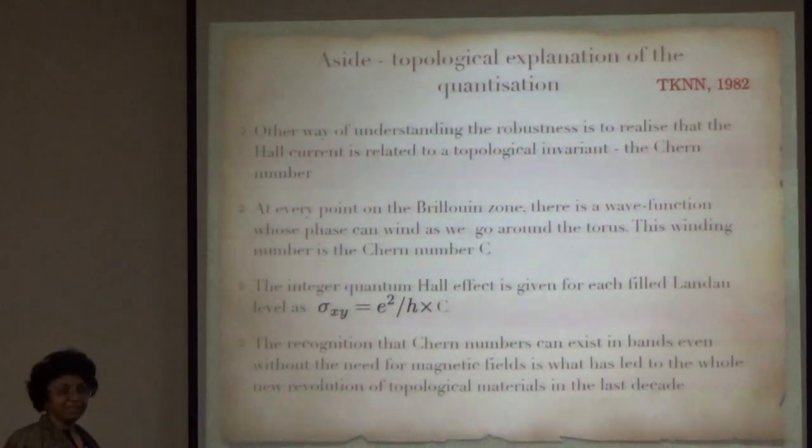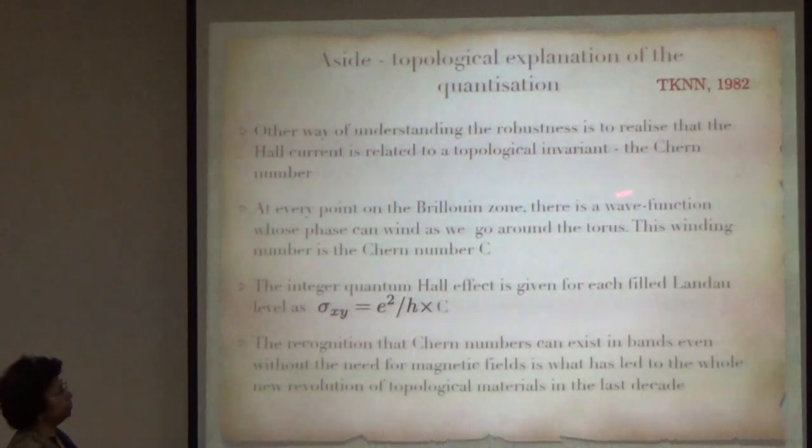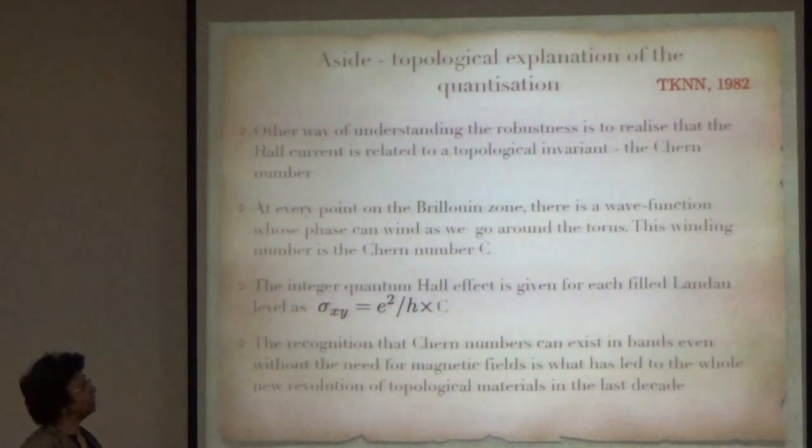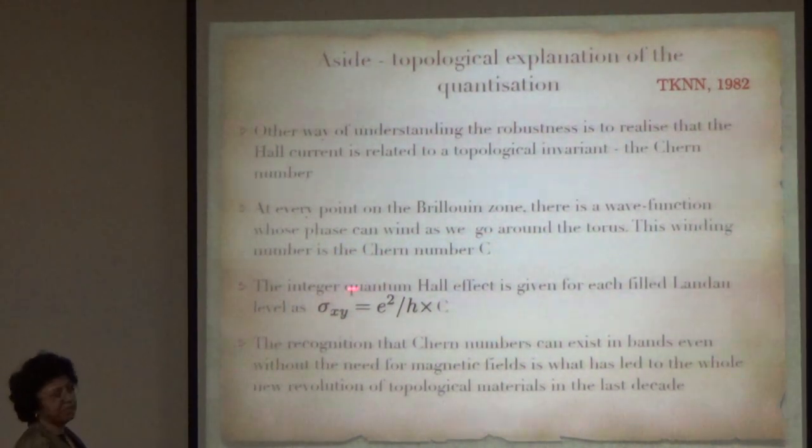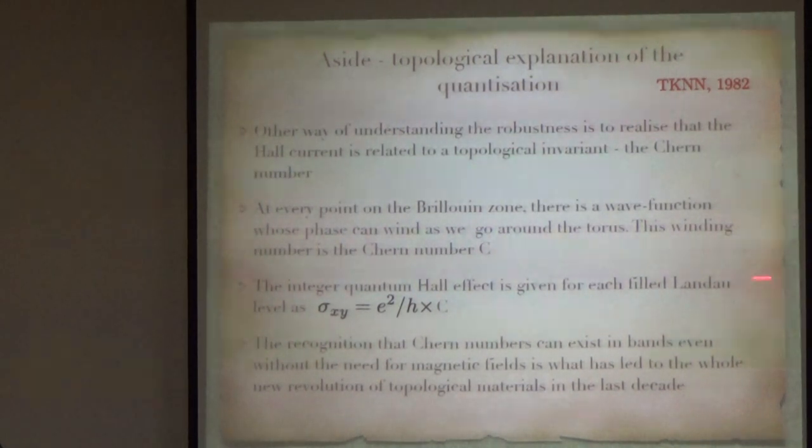This winding number is something called the Chern number. The integer quantum Hall effect conductance is given for each filled Landau level as e²/h times C, where C can be computed for these bands, for the Landau bands. This is how now one explains the integer quantum Hall effect.